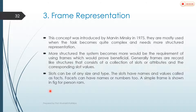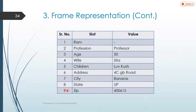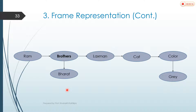A simple frame is shown as a figure for the person Ram. Here I give one example for the network representation — it is a semantic network representation example. We have two sentences: Ram, Bharat, and Lakshman are brothers, and the cat's color is gray. This is the representation for these sentences.